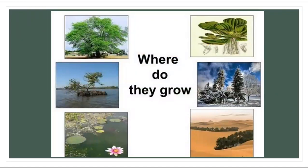Plants can grow in different habitats. Here we have six habitats — one, two, three, four, five, six — there are six different habitats where plants can grow. Plants have enough water to grow and have fruits and flowers.